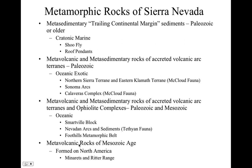The Mesozoic-age metamorphic rocks include the pyroclastic lava material that formed during the formation of the Sierra Nevada Batholith — like the Minarets in the Ritter Range, about 100 million years old, related to arc volcanism over the Sierra Nevada Batholith. Some of those have been metamorphosed by later intrusions of magma.